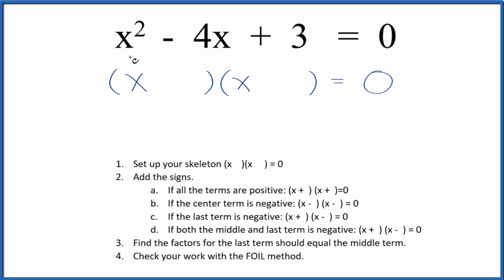All right, let's factor the equation x squared minus 4x plus 3 equals 0. And to do that, we'll use these guidelines here.